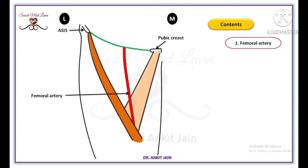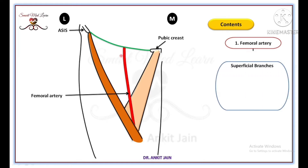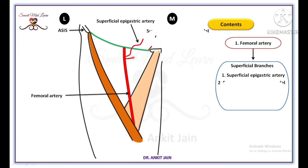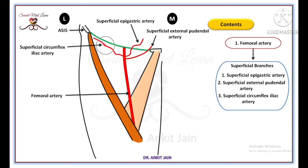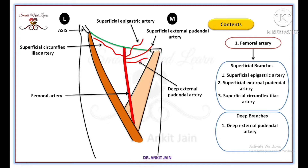In the femoral triangle, the femoral artery gives three superficial branches: the superficial epigastric artery, the superficial external pudendal artery, and the superficial circumflex iliac artery. The femoral artery also gives two deep branches in the femoral triangle: the deep external pudendal artery and the profunda femoris artery.